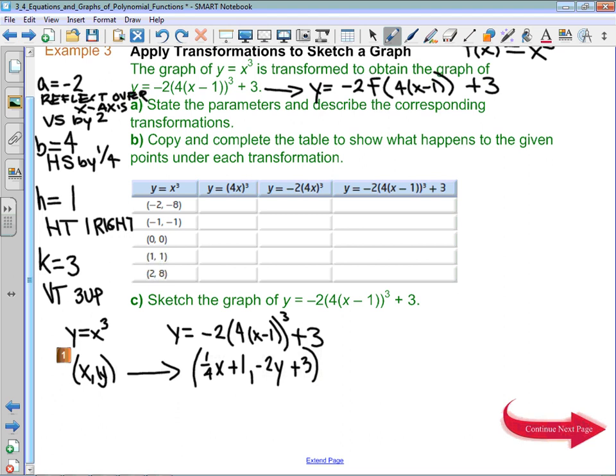If we look from the first column to the second column, all we're doing is taking a point X, comma, Y, and we're multiplying the X by 1 fourth. So negative 2, comma, negative 8 is going to turn into negative 2 over 4, comma, negative 8. Negative 1, comma, negative 1 is going to become negative 1 fourth, comma, negative 1. 0, comma, 0 will still be at 0, comma, 0. Remember that stretches don't affect the origin.